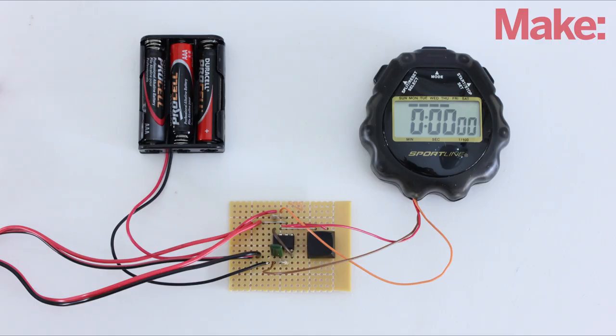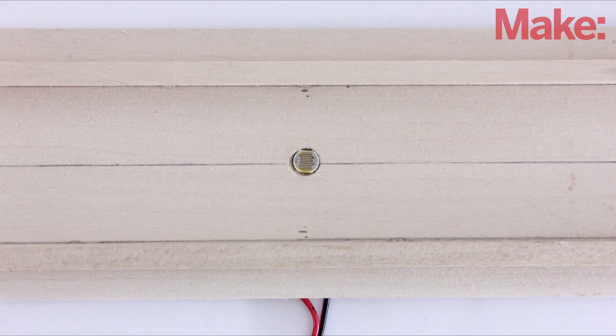The light sensors were connected to the board with a pair of long extension wires. This will allow them to be mounted to the track.